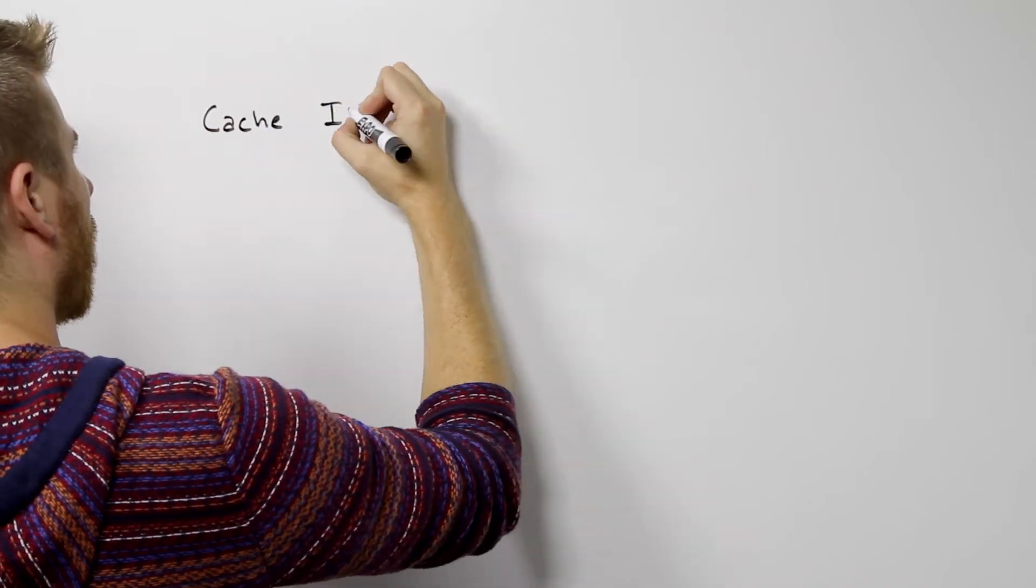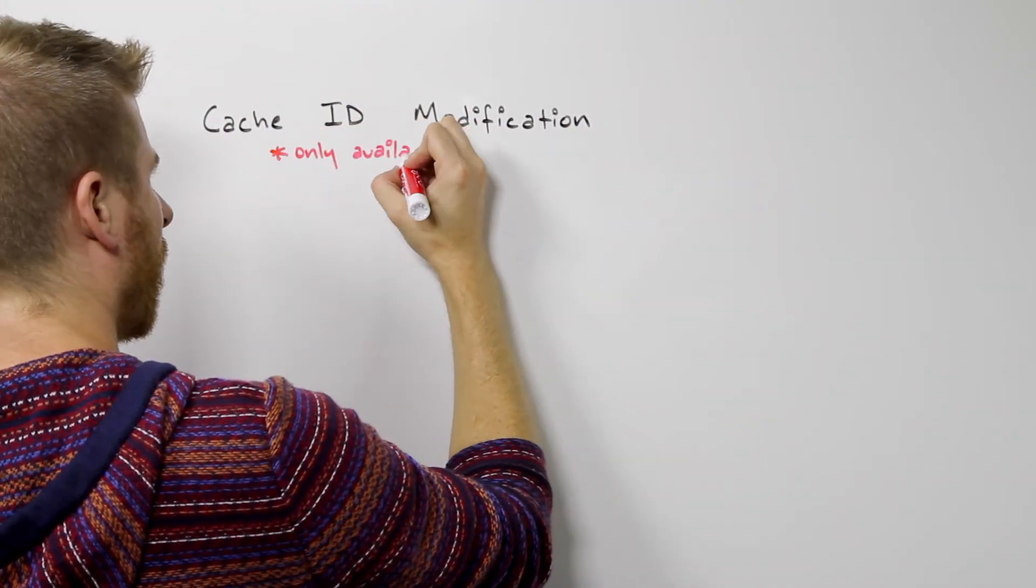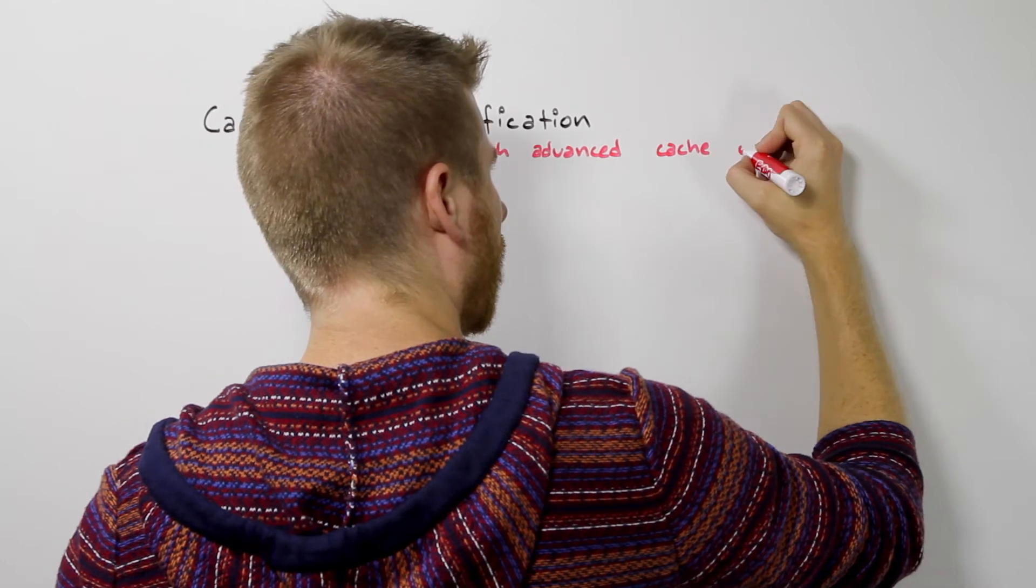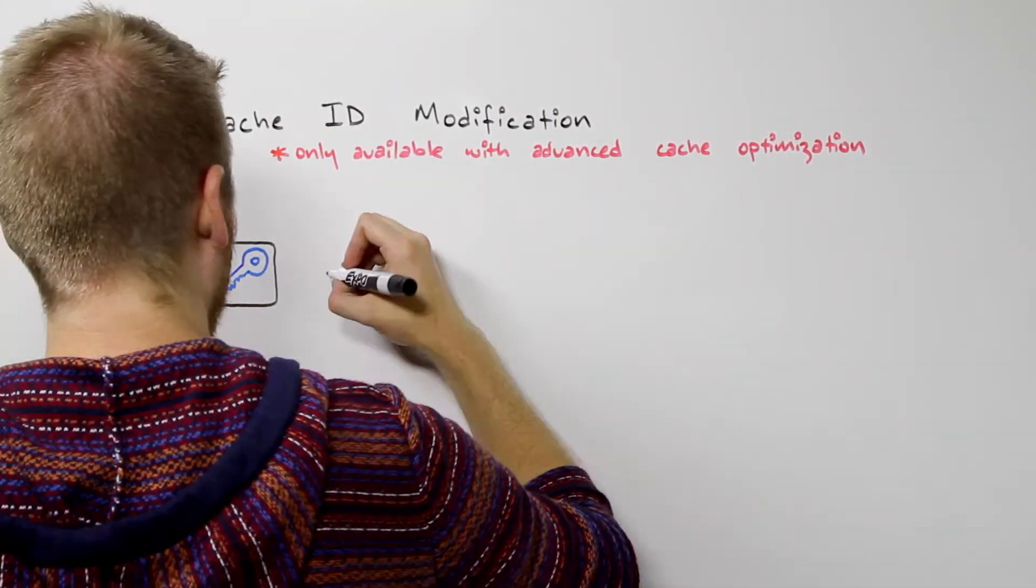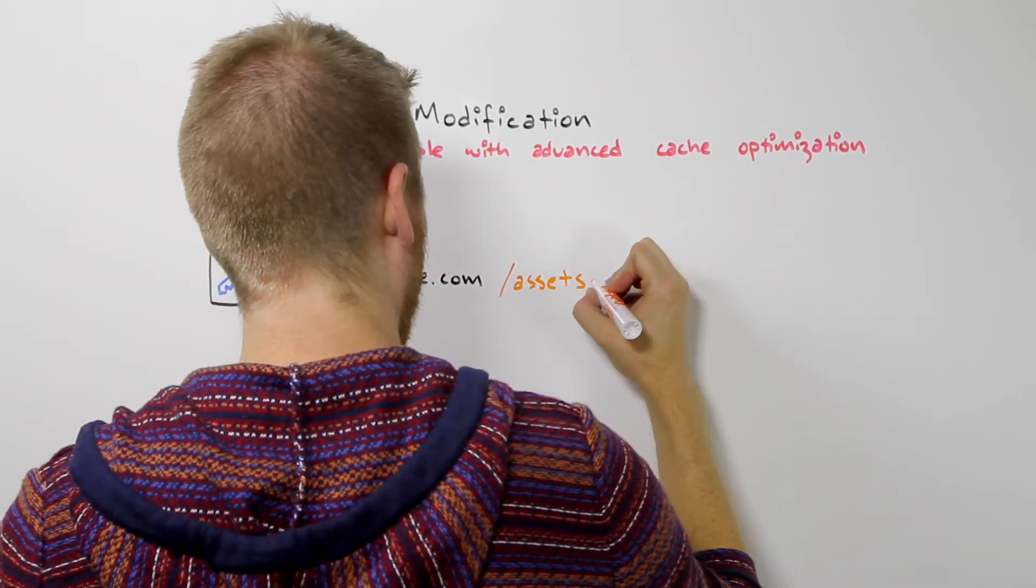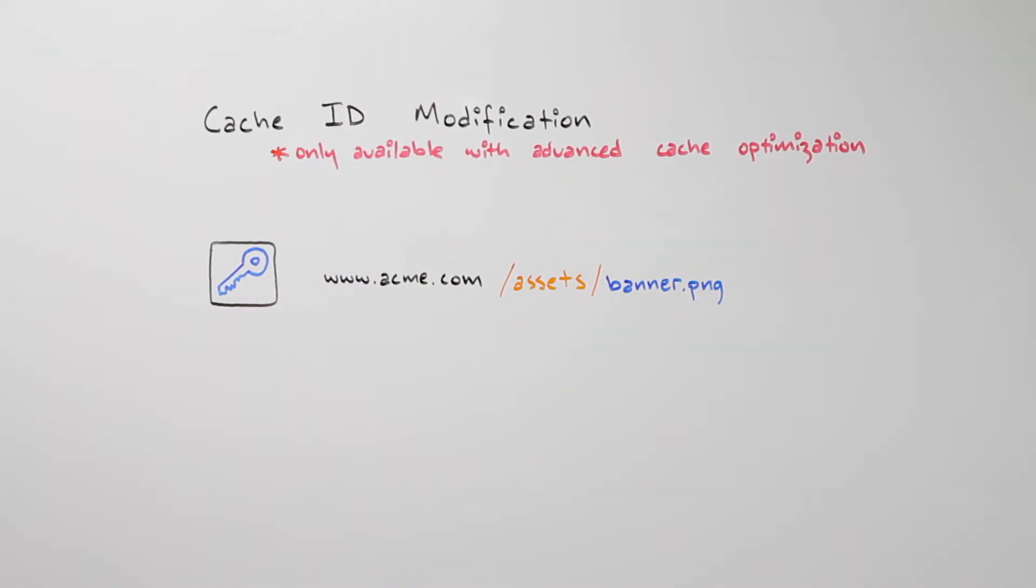The cache ID modification behavior, which is only available with the inclusion of advanced cache optimization module, takes the cache control options for setting the cache key beyond just path, filename, and query parameters by adding header or cookie values to the mix.